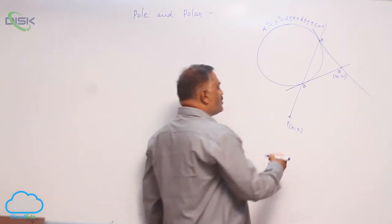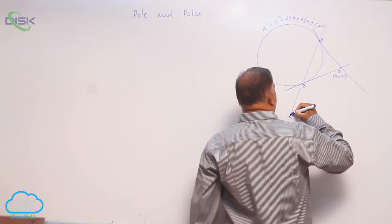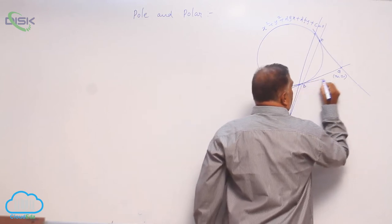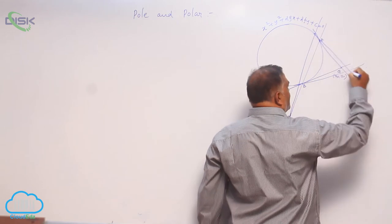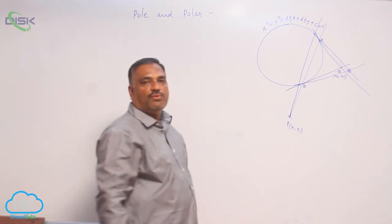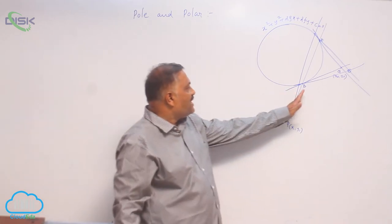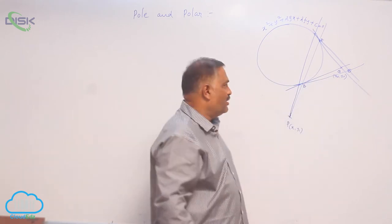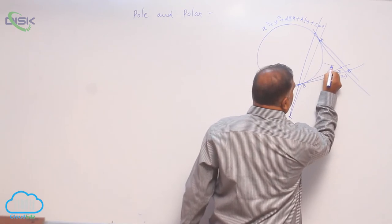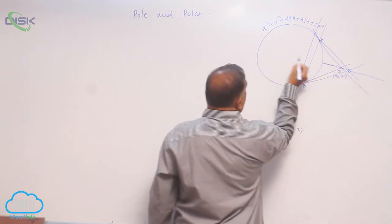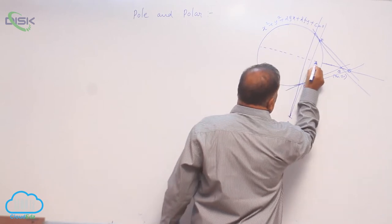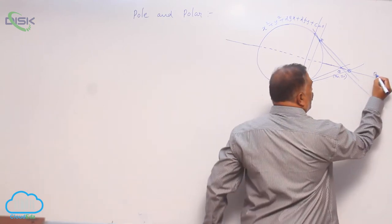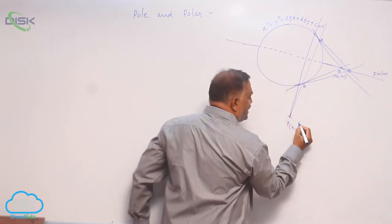Now, draw one more secant line through P to meet the circle at some other two points. In the same fashion, you draw two more tangent lines and again we are going to get one more point of intersection. As many secants are possible here, so many points of intersections are possible. Line joining of these two points forms a straight line, and this line is called polar and this point is called pole.